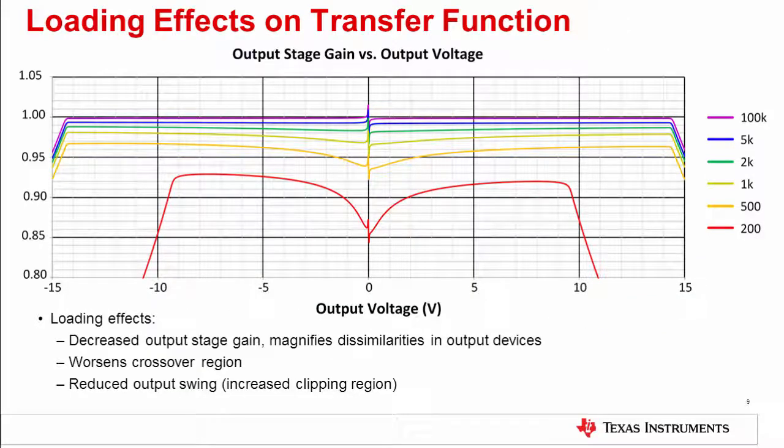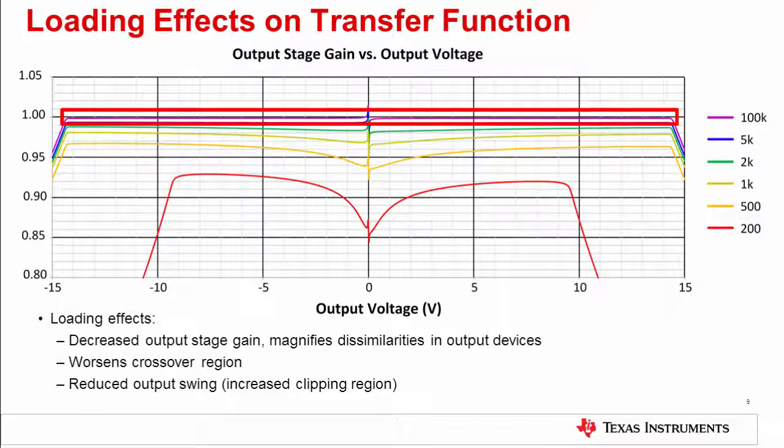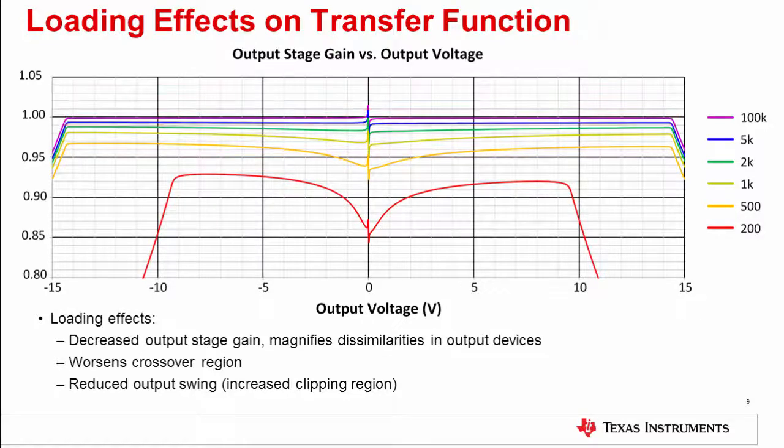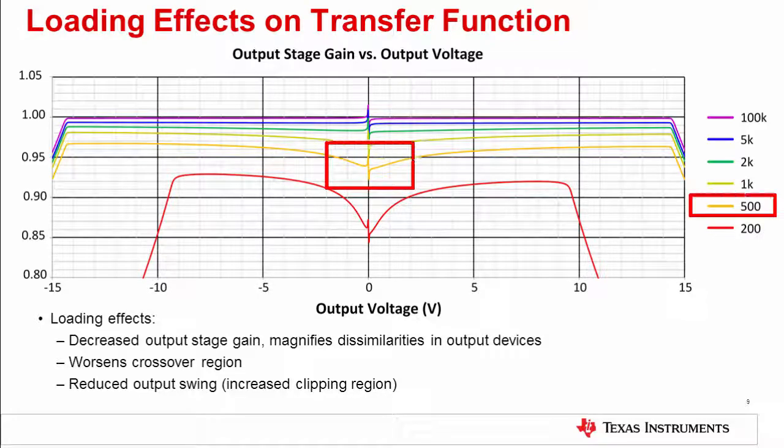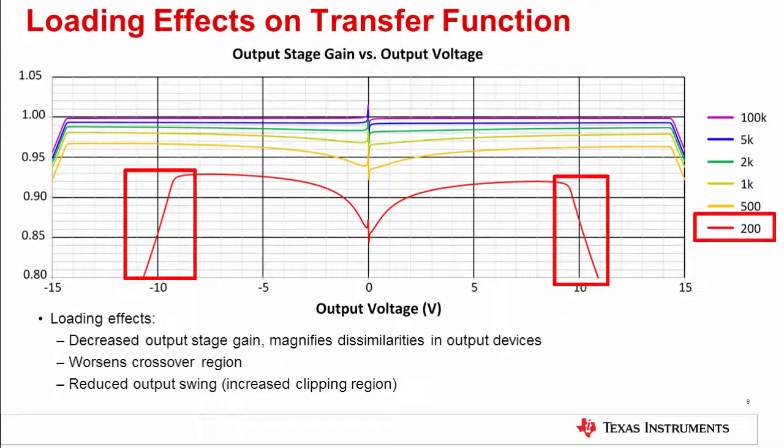Loading the output of an op amp makes all three of these effects worse. The lower the load impedance on the output of an op amp, the worse the distortion is in all three of the regions. So, the crossover distortion gets worse, the large signal nonlinearity gets worse, and the clipping regions will extend inward. Looking at the wing spread plot for high impedance load, such as 100 kiloohms, we can see that the gain of the output stage is essentially one. But, as the load impedance is decreased, a few things happen. First, in the large signal region, the gain of the output stage is decreasing. We also notice that the crossover region gets worse, and we can see that on either side of the discontinuity, the slope is increasing. Finally, the clipping region can drastically change, as seen with the 200 ohm load.